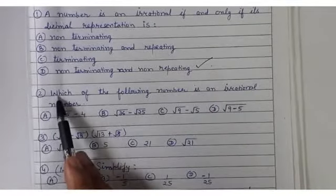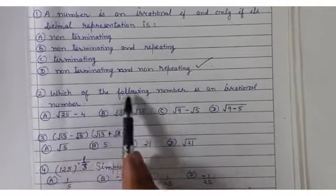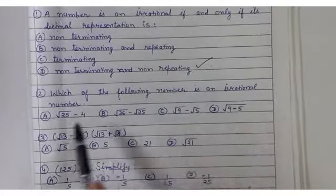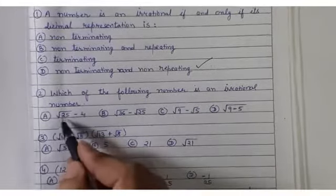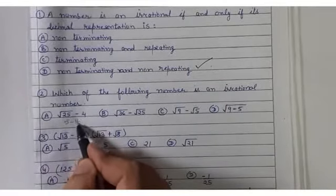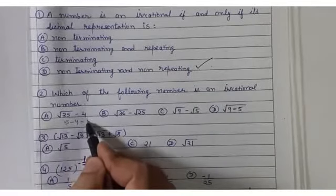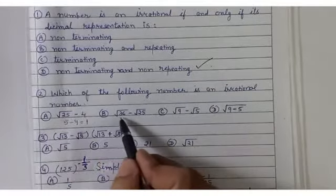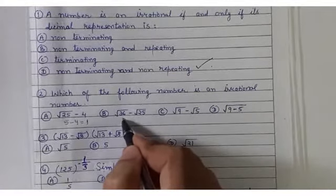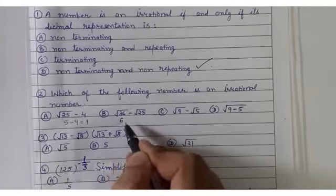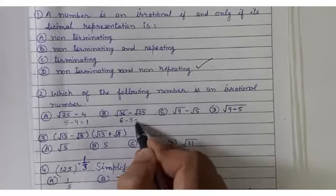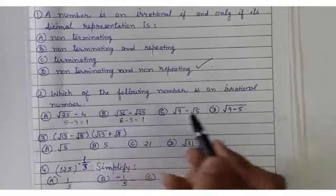Second question: which of the following numbers is irrational? Let me check. Square root of 25 is 5, and 5 minus 4 is 1. Square root of 36 is 6, and 25 is 5, giving 1 again.